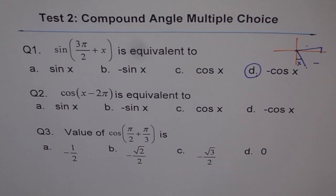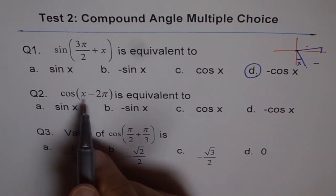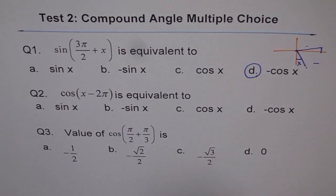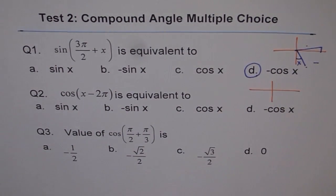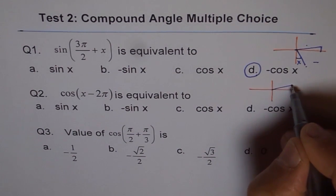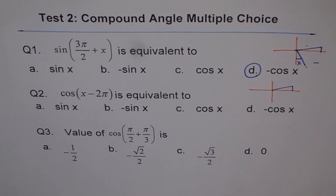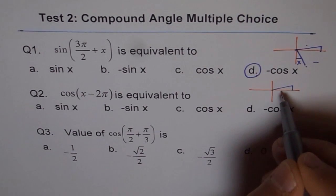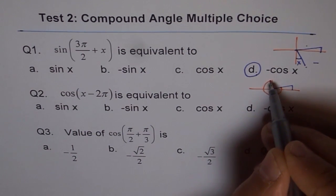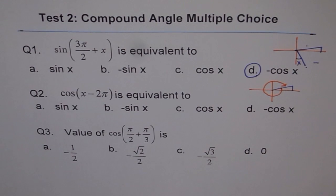Question 2. Cos of x minus 2π is equivalent to what? Now, let's say this is cos of x. So if you do cos of x and then you do minus 2π, so what really happens? That means you are here and you go back, minus 2π is going clockwise and you come back to the same place. Do you see that? You come back to the same place. So it is cos x.